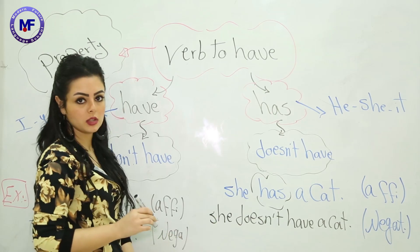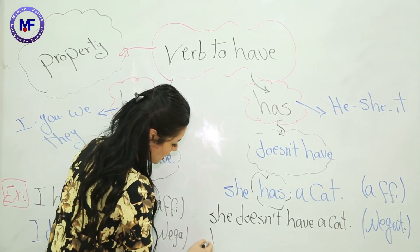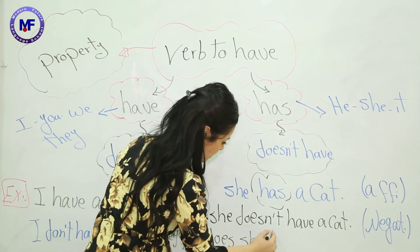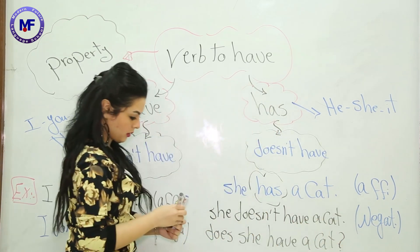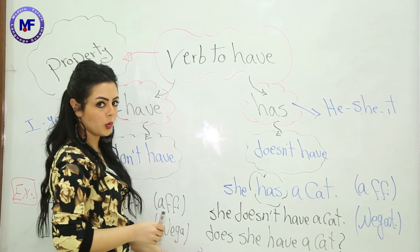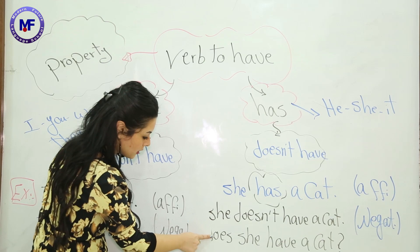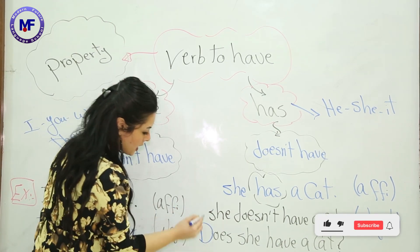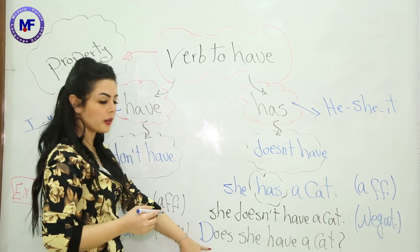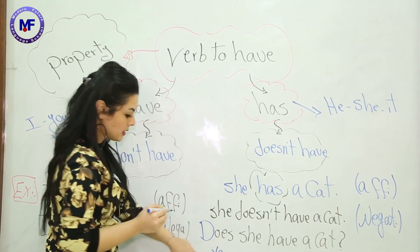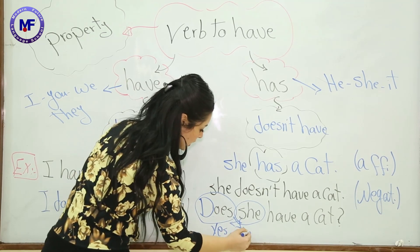If I want to make it a question, I start with 'Does': 'Does she have a cat?' Remember, when you make a question you start with a capital letter. Since the question starts with a helping verb, you answer with yes or no — a short answer: 'Yes, she does.'